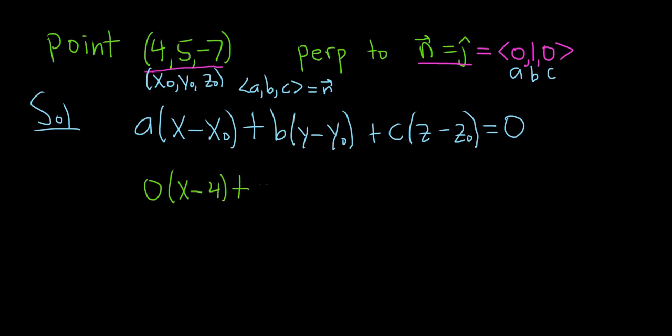plus b, which is 1, (y - y₀), y₀ is 5, plus c, which is 0, and then z minus z₀, so z + 7. And all of this is equal to 0.